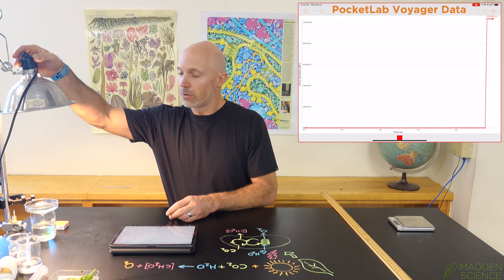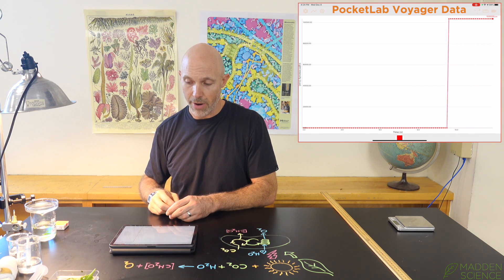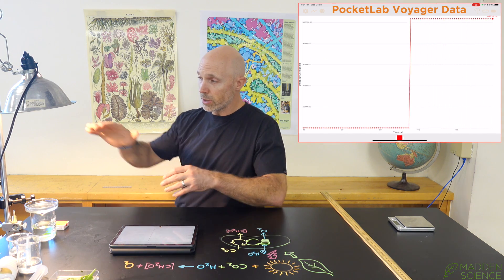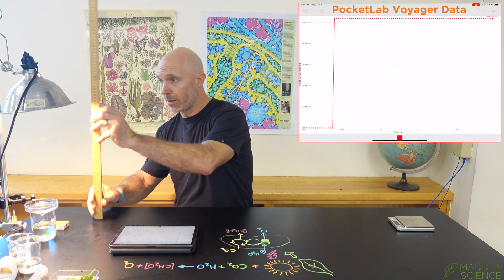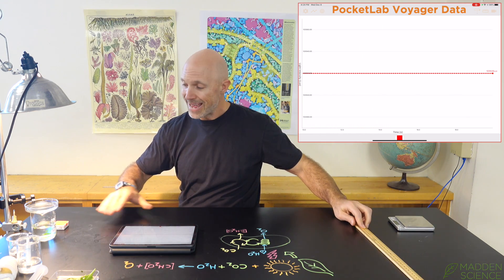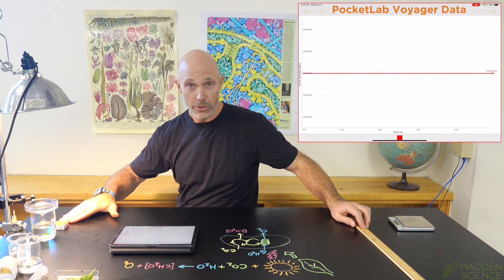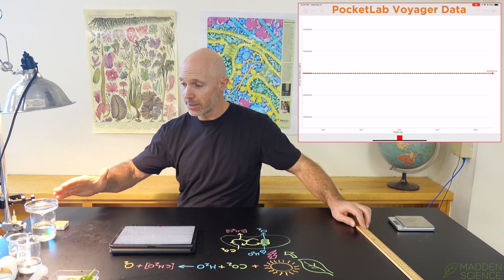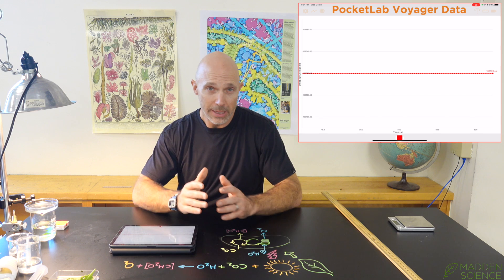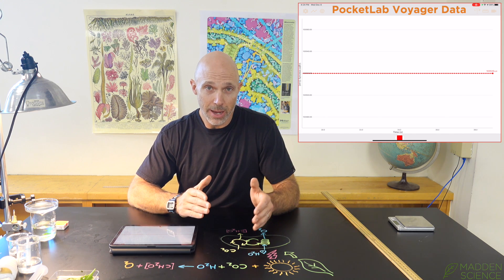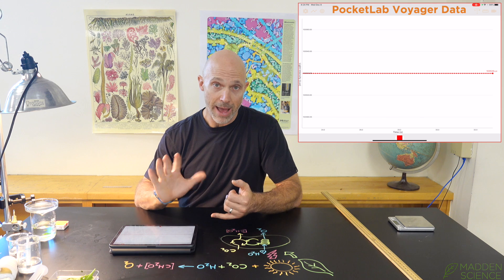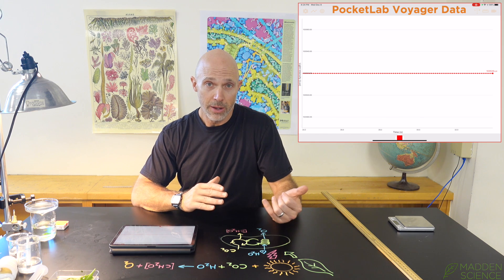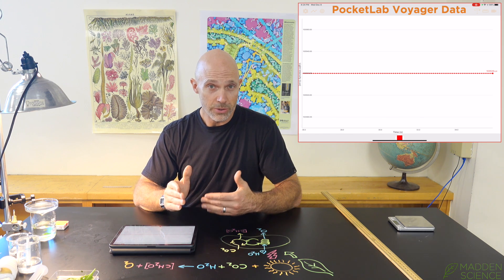I'm going to start recording and set the PocketLab next to my beaker with my leaf discs. When I turn on the light source you can see the reading skyrocket up. Now you can adjust the distance and measure the light intensity at each position — keeping track of light intensity versus distance and ultimately your ET50: how long it took for 50%, or 5 out of 10, of your leaf discs to start floating.